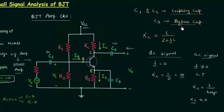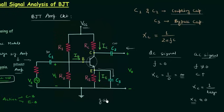C3 is called the bypass capacitor because it bypasses the AC signal. The AC signal has two paths: one through resistance RE and one through capacitor C3. Since C3 offers zero reactance for AC, the AC signal chooses the path through C3, effectively short-circuiting RE. We short-circuit RE because the gain reduces due to RE — if we short-circuit RE, the gain will increase.